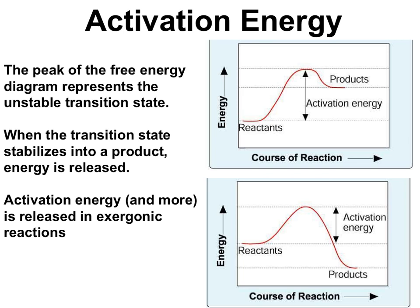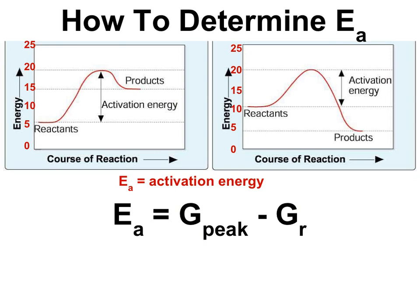To become unstable, energy has to be put into the reactants to reach this unstable transition state. Then energy is released when that transition state chemical becomes a product. Moving up the slope is energy being put in, and moving down is energy being released. So every reaction requires energy input and gives energy output. When we call something exergonic or endergonic, it's about the net amount of energy: in endergonic reactions, more energy is put in than given out; in exergonic reactions, less energy is put in than given out.